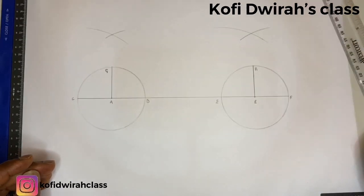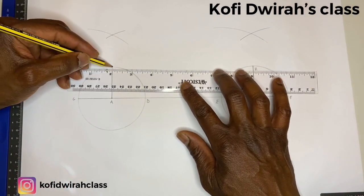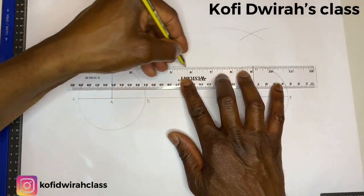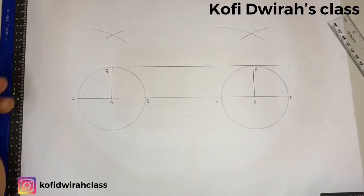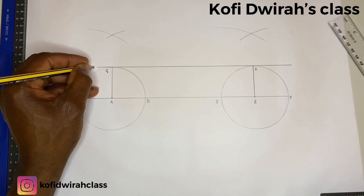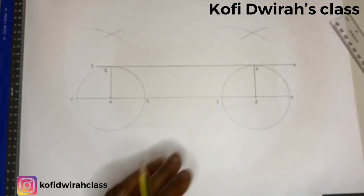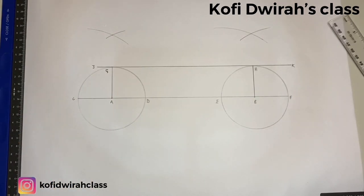So we are going to draw our tangent. From this point, you draw your line. So we have JK. Our tangent here is JK. This is how to construct a common external tangent.